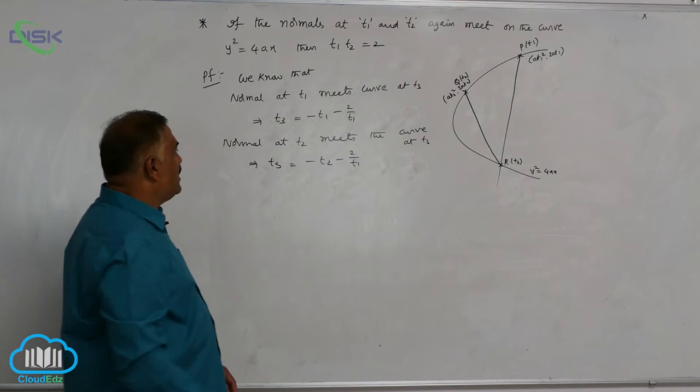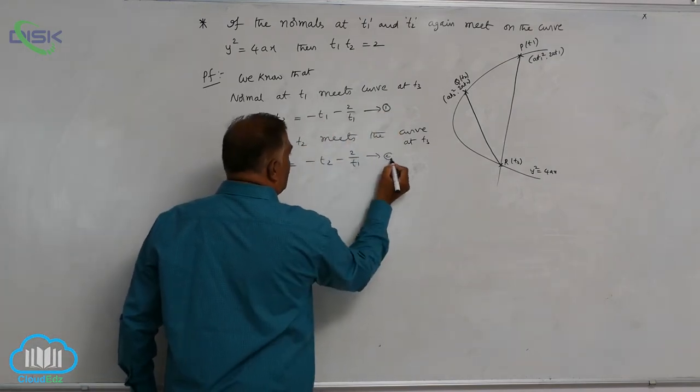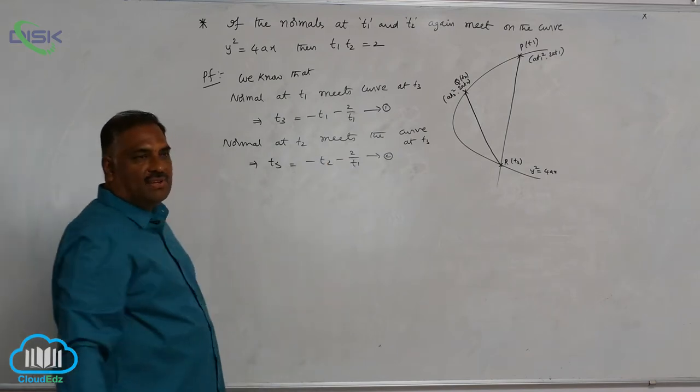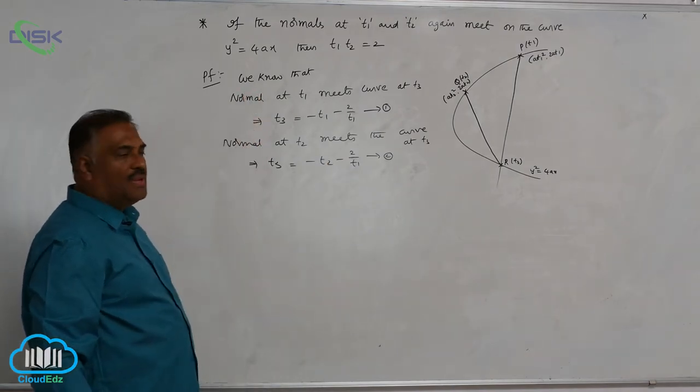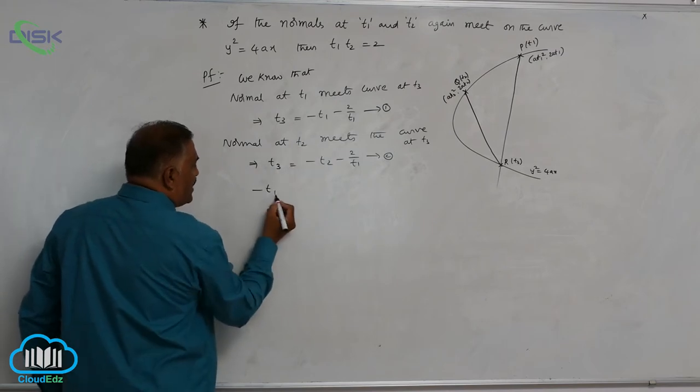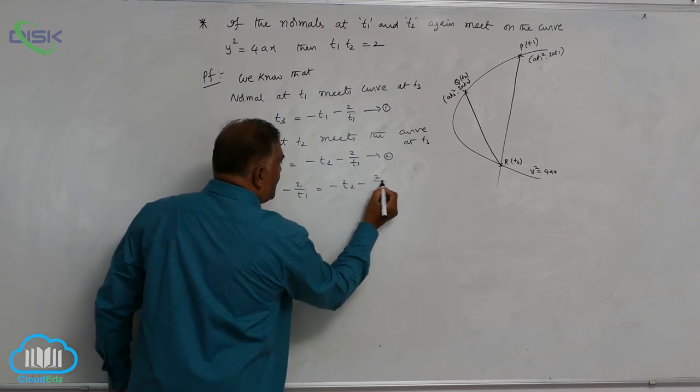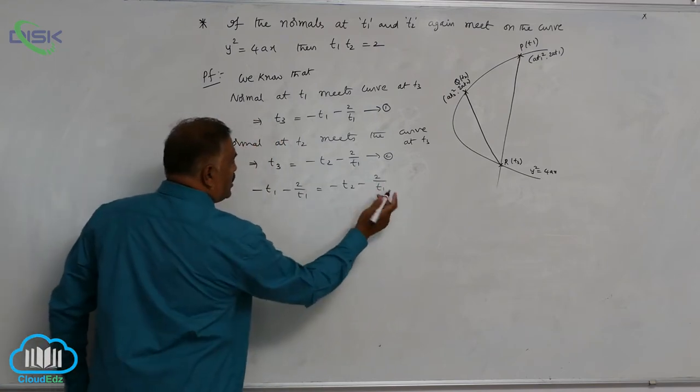You observe that these two are called equation 1, equation 2. Both 1 and 2 are expressed in terms of t3 only. Now, let us equate these two: -t1 - 2/t1 = -t2 - 2/t2.